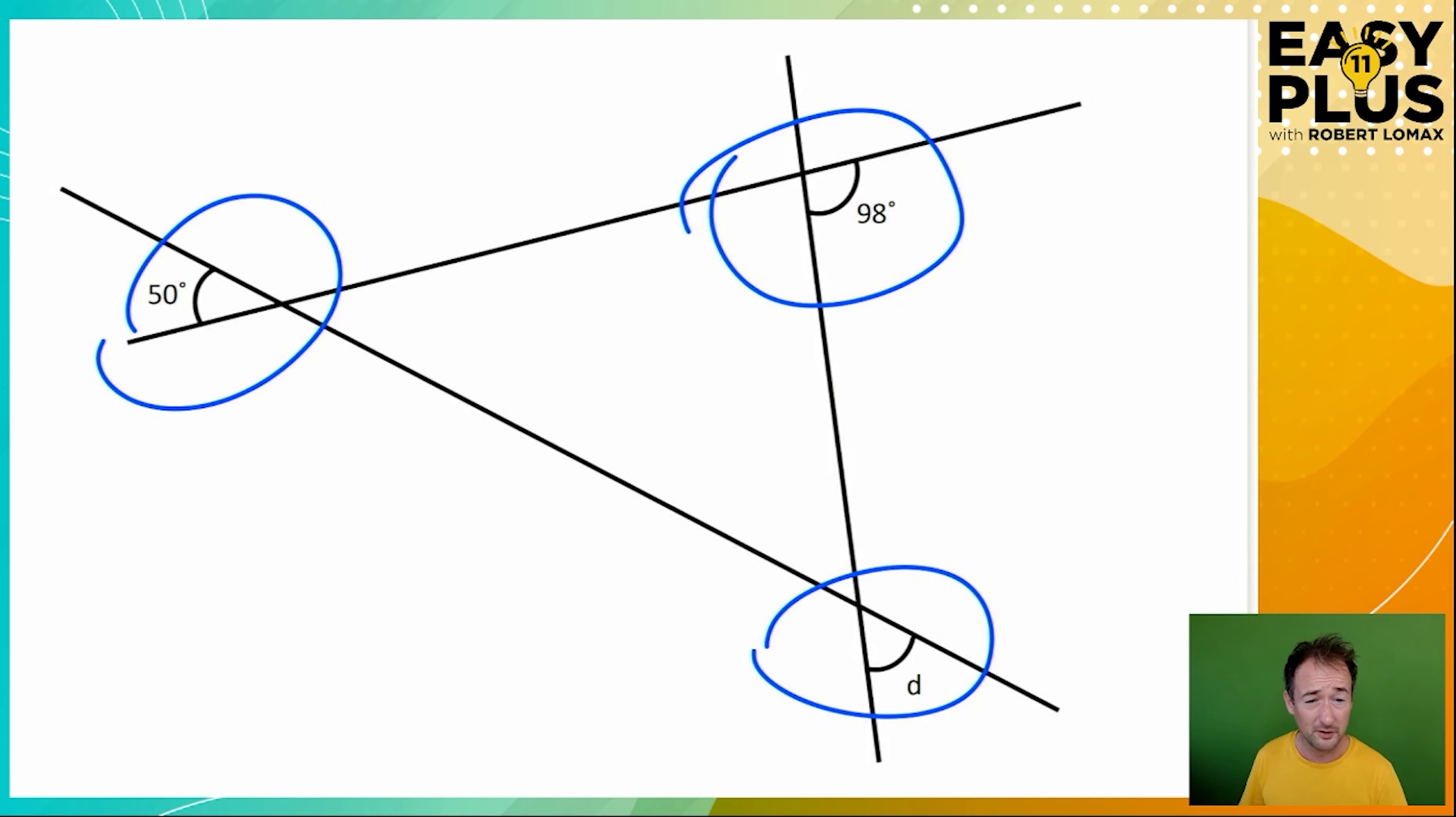Here's a slightly more complicated problem where we have to apply a range of skills in steps. Now when you look at something like this, you might immediately think, how do I get from this and this to working out this? And it probably won't be obvious straight away. What you need to do is just move around the diagram, filling things in as you work them out, until you have enough information to find the answer. Let's do that.